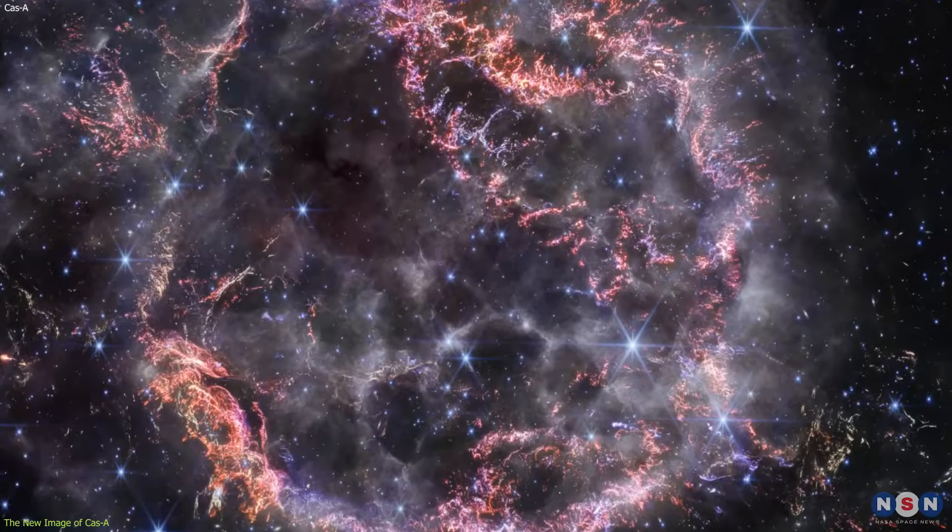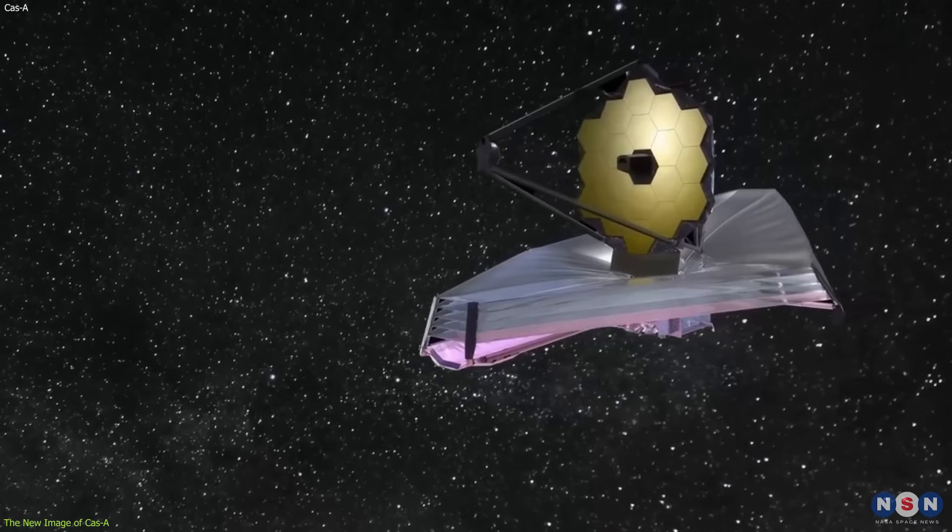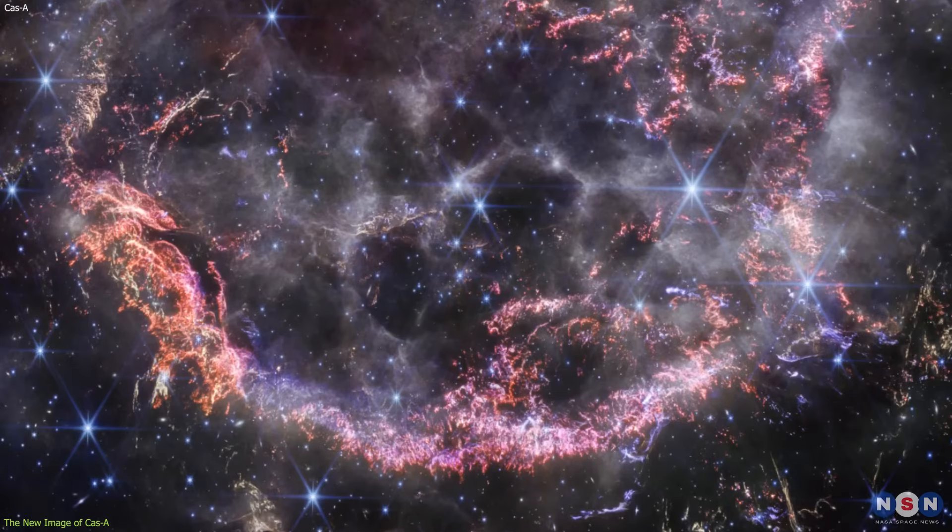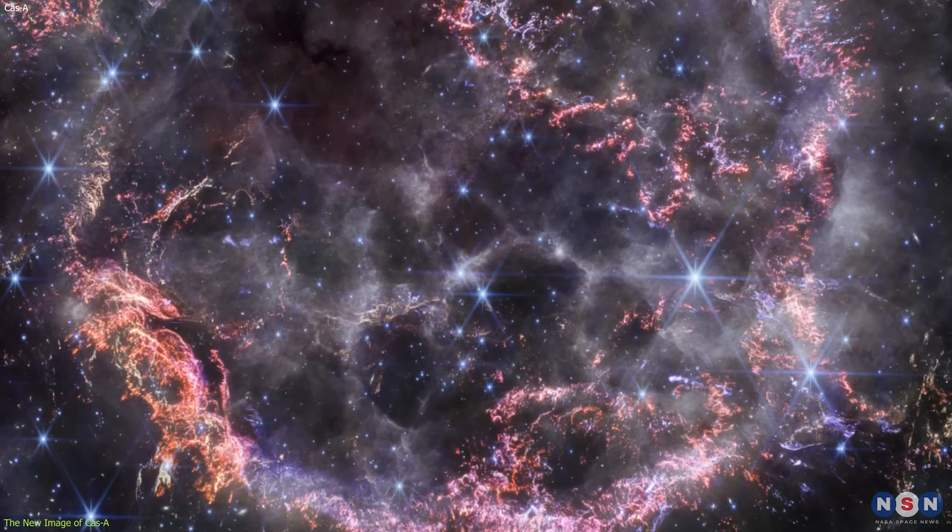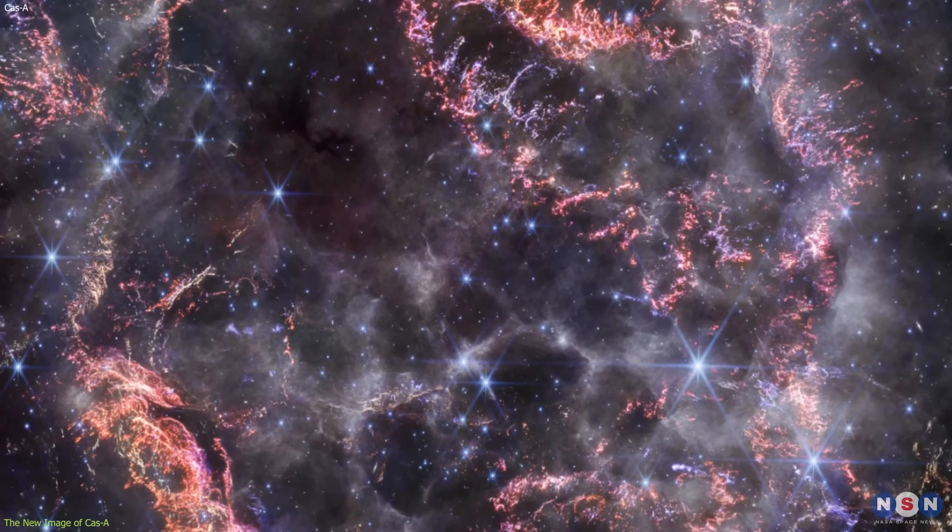This new image is different from the previous images taken by the James Webb Telescope, which also showed the supernova remnant in infrared light, but with different colors and features.